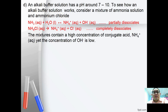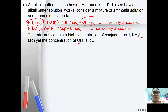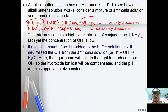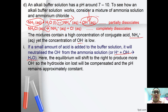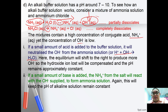An alkaline buffer solution works in a similar way. It consists of a weak base that is partially dissociated and a salt of the weak base that is completely dissociated, giving a high concentration of ammonium ions but a low concentration of hydroxide ions. If a small amount of acid is added, it reacts with OH-, causing the equilibrium to shift right to compensate, keeping pH virtually unchanged. If a small amount of base is added, it reacts with NH4+ to reform ammonia, keeping OH- unchanged and pH constant.